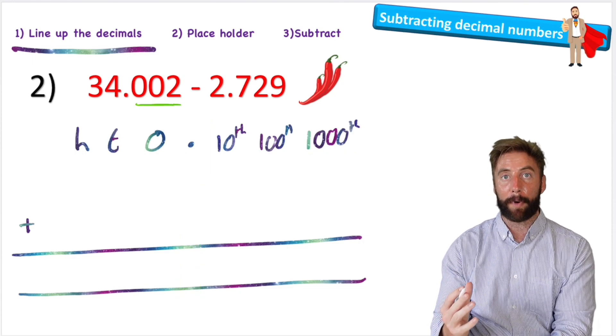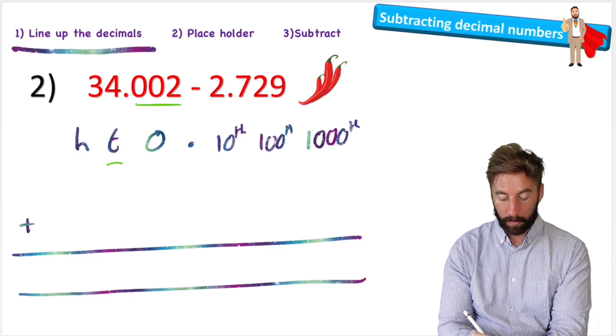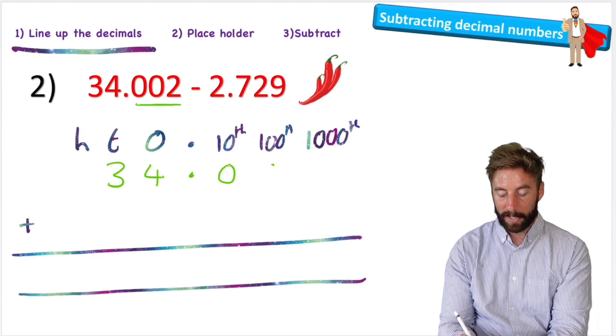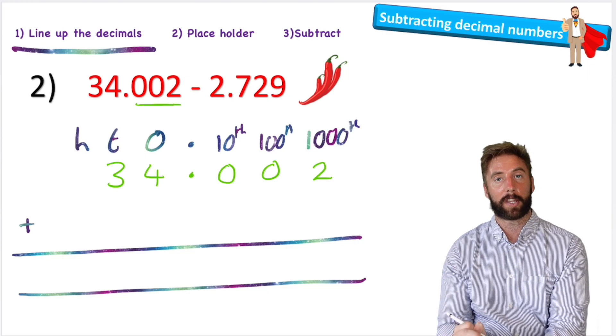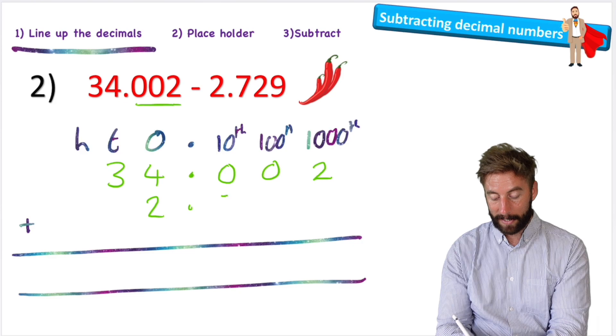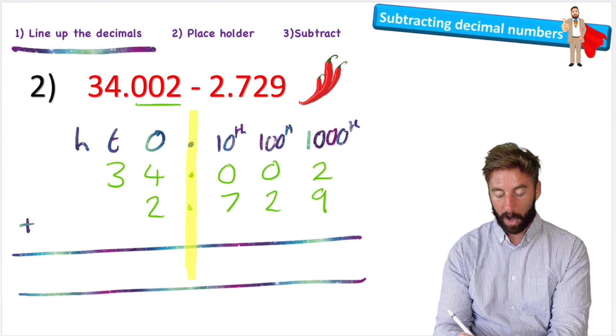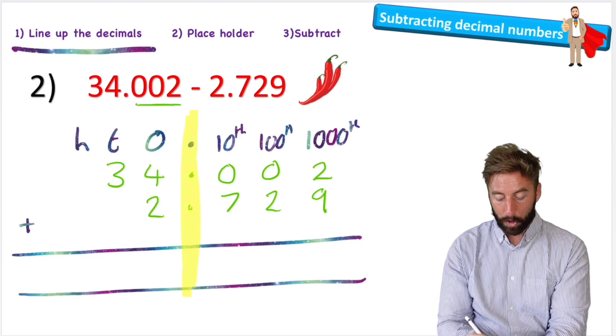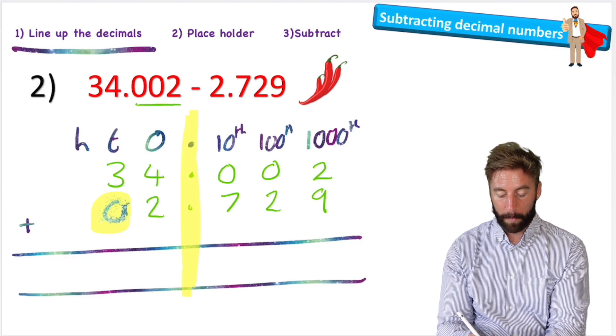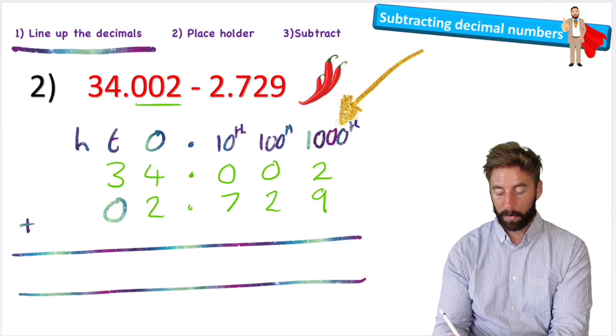Now I'm ready to put my numbers in place. 34.002, so thirty-four is made up of three tens, four ones, a decimal, zero tenths, zero one-hundredths, and two thousandths. Now I can subtract the next number, which is 2.729. First thing to notice: all my decimals are in the same line, but I also have this gap that I need to put a placeholder into. So let's do it. Put my placeholder there. Now I'm ready to start. Start where my smallest value, and two subtract nine I cannot do, so I'm gonna have to look next door.